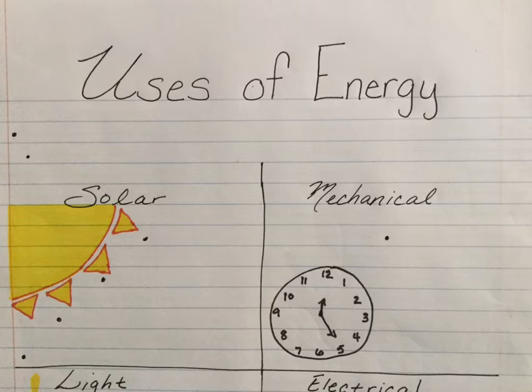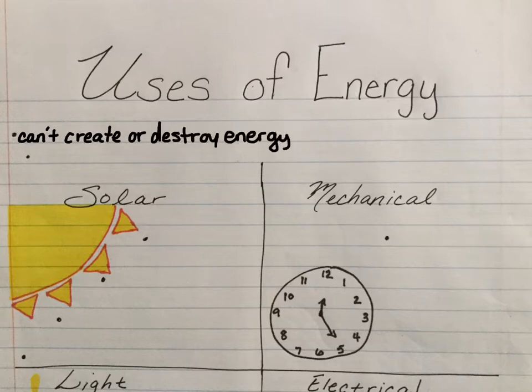So first things first, two things you got to know about energy: we cannot create energy, we also cannot destroy energy. That means that all energy that is on Earth right now has always been on Earth.